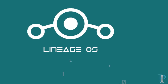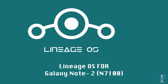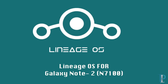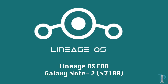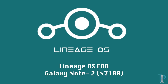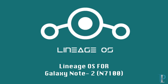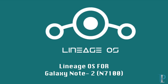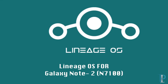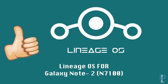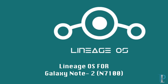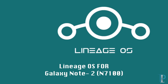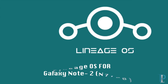Welcome back to Technopedia everyone. Lineage OS is the new successor of CyanogenMod, which was released in December of 2016. We are really happy to have it on our old device, the Galaxy Note 2 which is the N7100 — thumbs up to the developers for this. Today we are going to be installing Lineage OS on our Galaxy Note 2, so without any further ado let's get started.